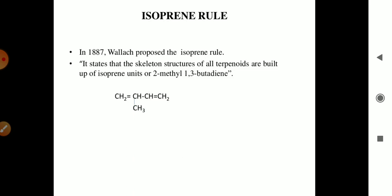As we learned earlier, terpenoids are made up of isoprene with head-to-tail bonding of isoprene units. The skeleton of terpenoids is built up of isoprene units or 2-methyl-1,3-butadiene.